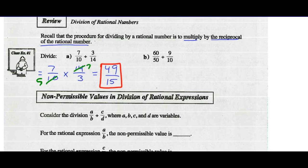Part B: 60 over 50 divided by 9 over 10. The rule is keep your first fraction, change division to multiplication, and take the reciprocal of your divisor. So 60 over 50 divided by 9 tenths is the same as 60 over 50 multiplied by 10 over 9.